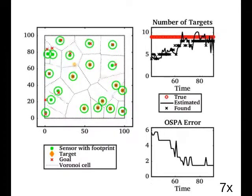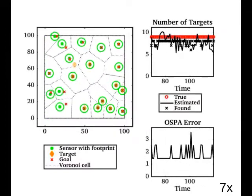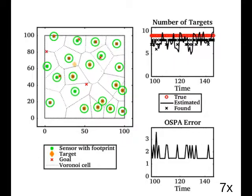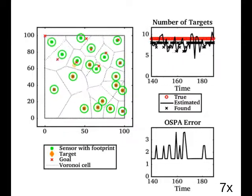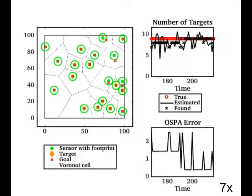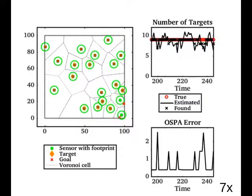We first test the ability of a team of 20 robots to use this algorithm to detect 9 static targets. Initially, the PHD is uniform, causing the robots to spread out.